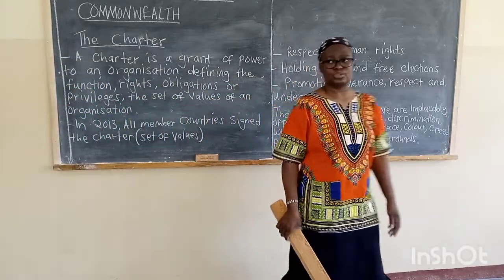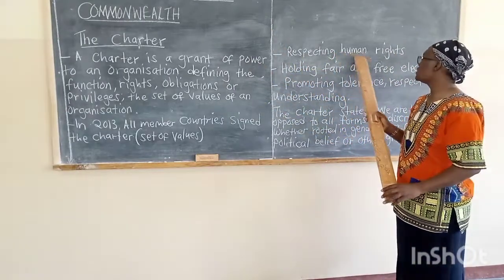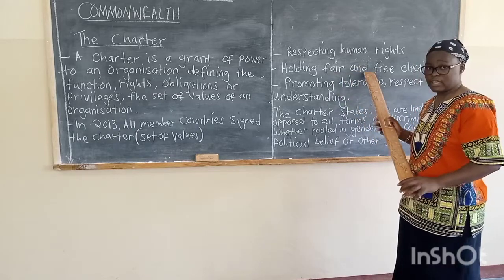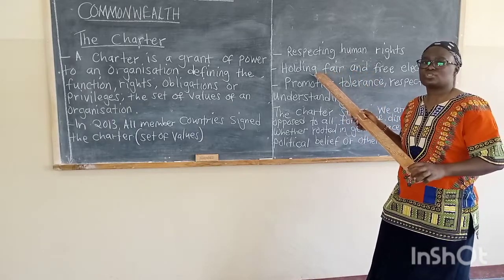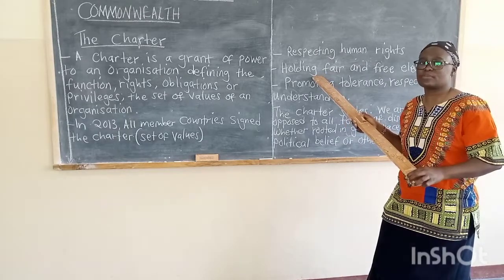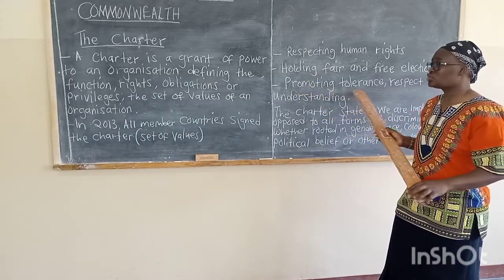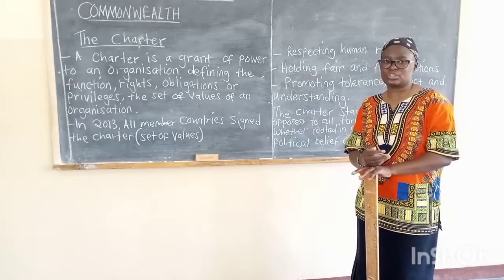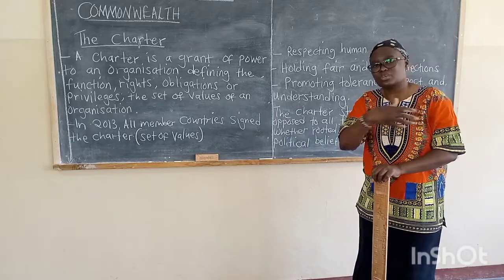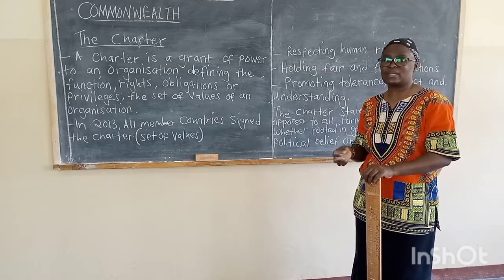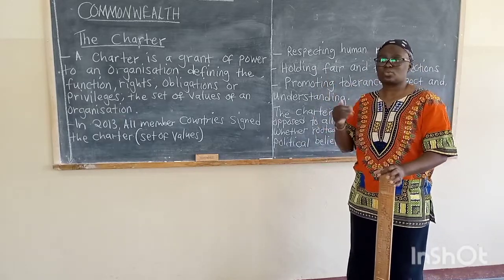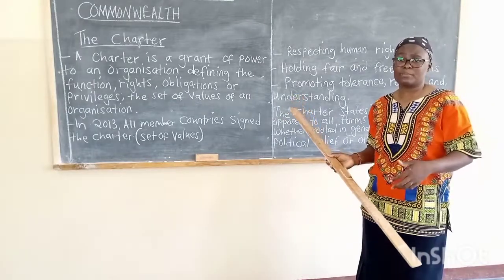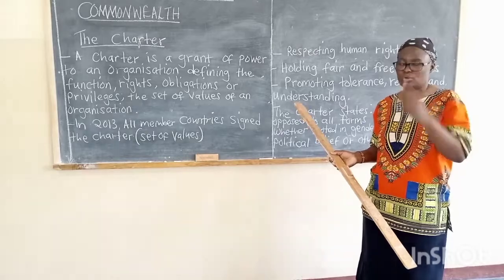Some of the values that Zambia and other countries signed to include: respecting human rights in all angles; voting in free and fair elections — member countries are encouraged not to intimidate their citizens when it comes to voting or force them to vote for a particular candidate; and promoting tolerance, respect and understanding among citizens. For example, we have 72 tribes in our country, so you need to allow divergent views and tolerate one another — not just among citizens of Zambia but also among the member countries.